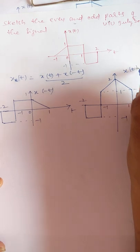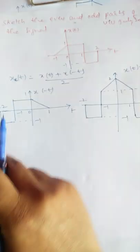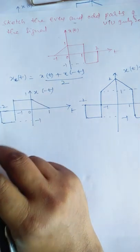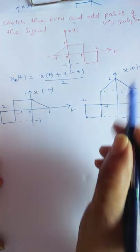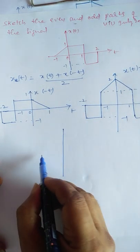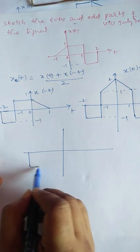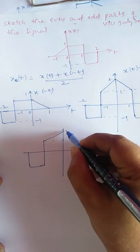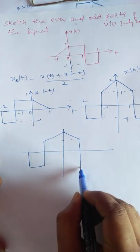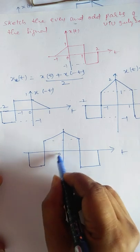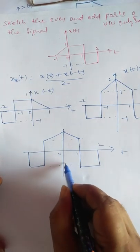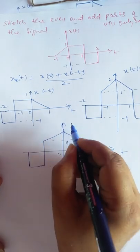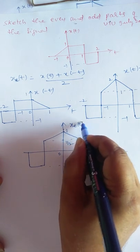This is x(t) + x(-t). To get the even component, this sum must be divided by 2, so the amplitude becomes half. The even component xe(t) has the same shape, but all amplitudes are halved: minus 1 becomes minus 1/2, 1/2 remains 1/2, and 2 becomes 1. This is the even component of the signal.